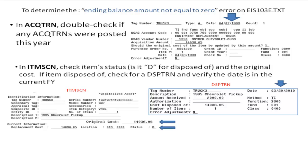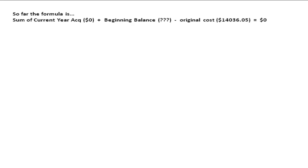Verify that the disposition date is in the current fiscal year. For our example, there were no current year acquisitions. The beginning balance is unknown. The original cost is $14,036.05. That should equal zero. In order for this formula to be correct, our beginning balance should be $14,036.05, because this item was active at the beginning of the current fiscal year and wasn't disposed of until halfway through the year.